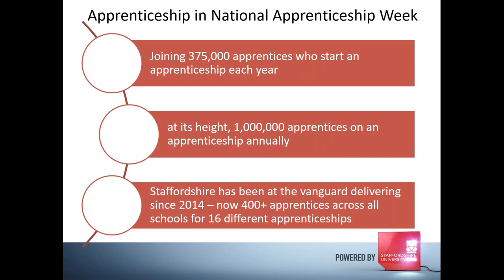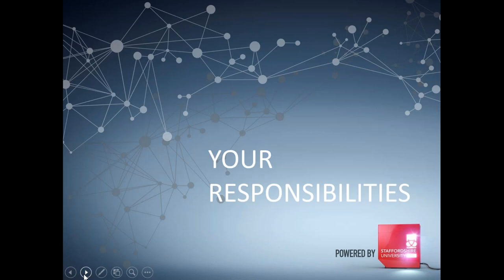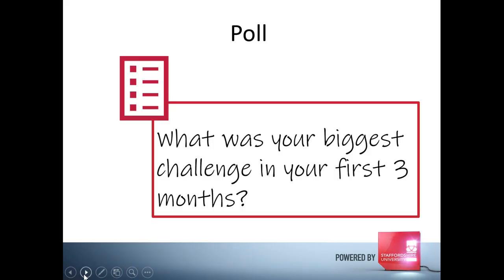The apprenticeship program is the government's flagship program and a core offer at Staffordshire University to help people already in work have a structured learning program. We've been at the forefront of this — when degree-level apprenticeships started around 2014, long before the new reforms were in place, we'd already started our program. We now have over 400 apprentices studying for 16 different apprenticeships, and the program continues to expand. Now I want to ask another quick poll about what your biggest challenge was in your early months.